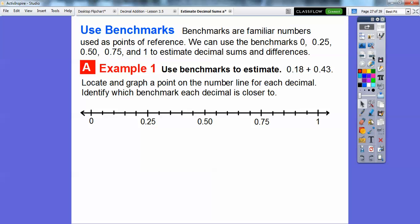Here's a number line. Locate and graph a point on the line for each decimal. Let's put a point for 0.18. These are going by 5 hundredths: 5, 10, 15, 20, 25. If this is 20, then 18 is going to be right here.